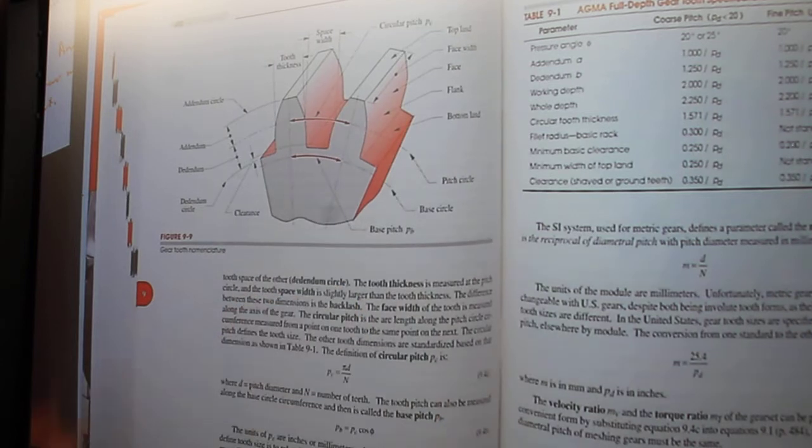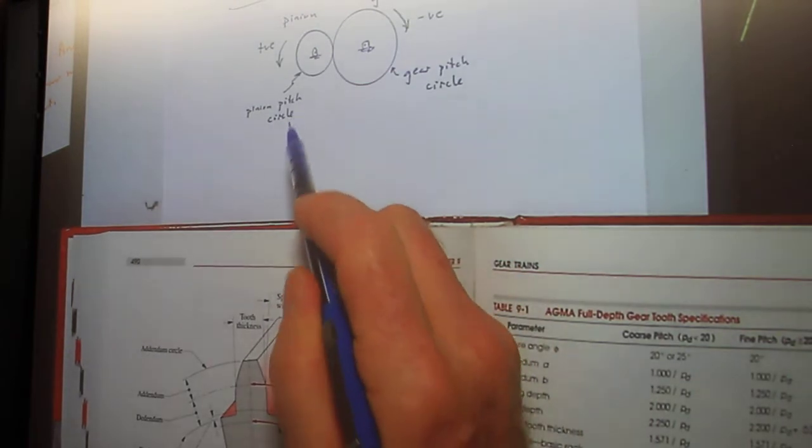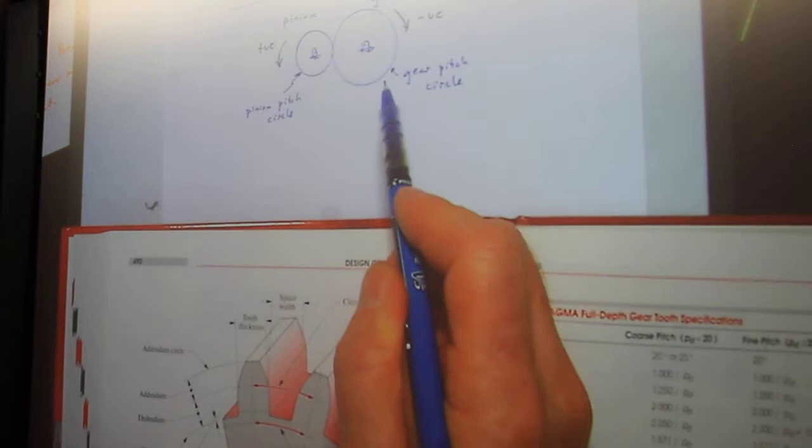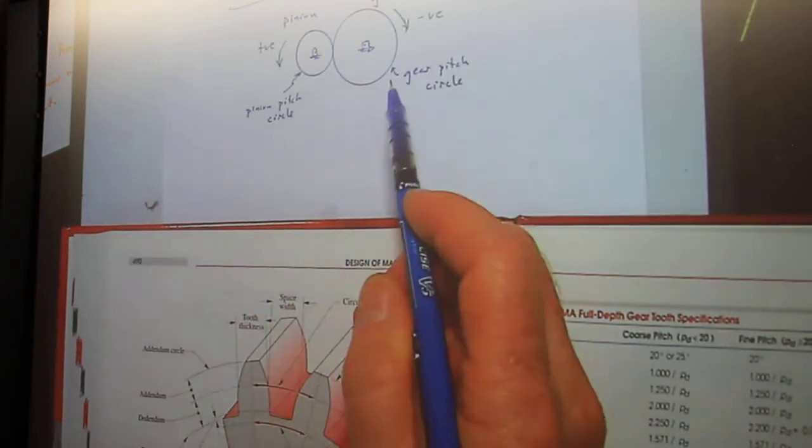So when I draw this and I draw them as touching, that means I'm drawing the pitch circles. And the ratio between the pitch circles gives you your gear ratio.